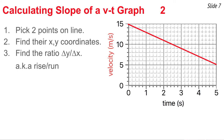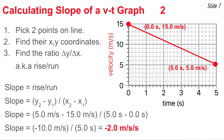Let's look at two more examples. In this graph, I pick two points whose coordinates I clearly know. The first point has coordinates 0 seconds and 15.0 m/s, and the last point has coordinates 5.0 seconds and 5.0 m/s. Then I plug into the equation: slope equals change in y divided by change in x, or y2 minus y1 divided by x2 minus x1. The numerator is 5.0 m/s minus 15 m/s, which equals negative 10 m/s. The denominator is 5 s minus 0 s, which equals 5 seconds. The slope is negative 2 meters per second per second, meaning the object is accelerating in the negative direction at a rate of 2.0 m/s².